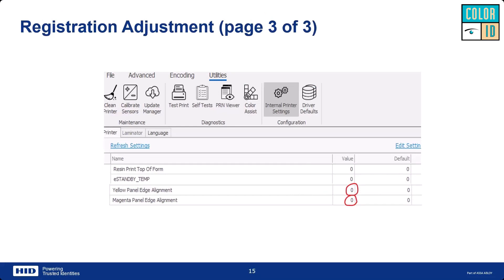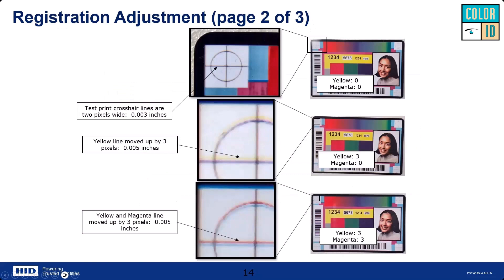These settings are the yellow panel edge alignment and the magenta panel edge alignment. Each increment you increase that value moves the panel by the equivalent of one pixel. For example, if you increase the yellow value to three, that shifts the yellow panel up three pixels — not very much, but noticeable when you print the registration card.